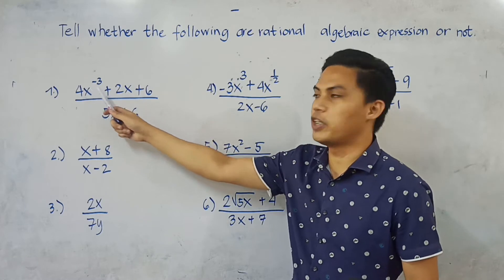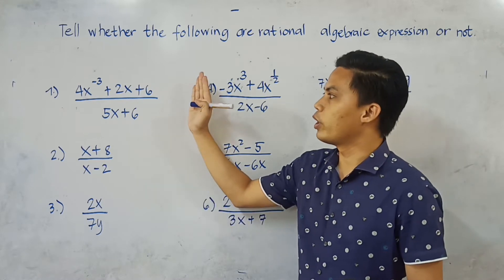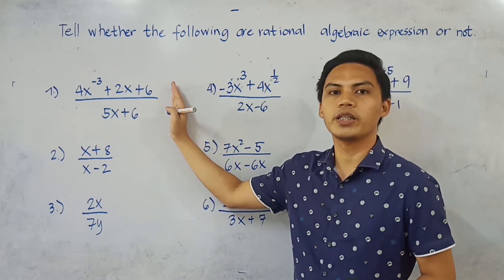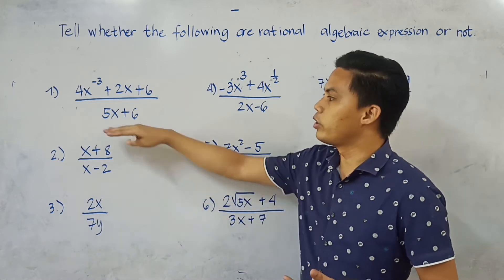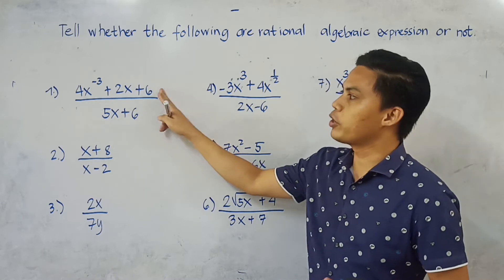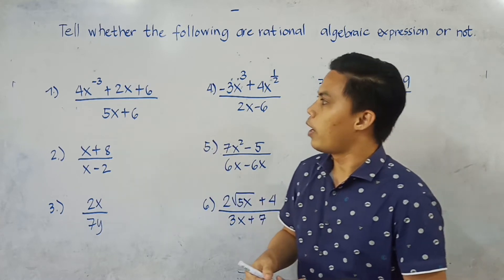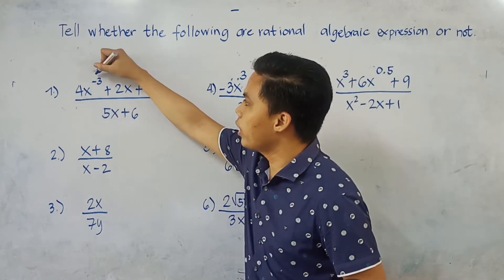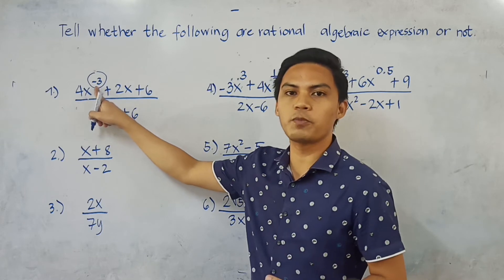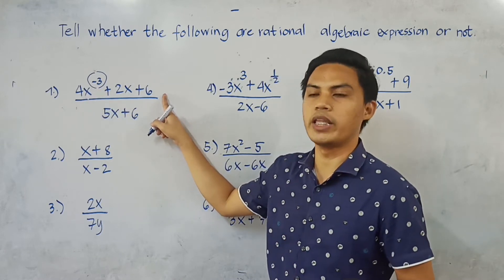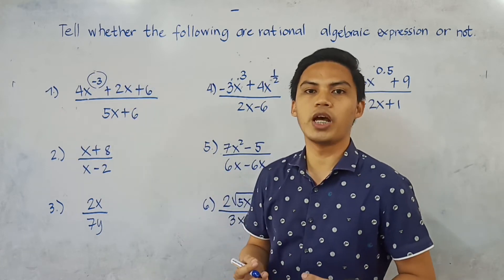Number 1: We have 4x raised to negative 3 plus 2x plus 6, all over 5x plus 6. This is NOT a rational algebraic expression. The denominator is a polynomial; however, the numerator is not a polynomial — because one of its variables has a negative exponent. Since the numerator is not a polynomial, this expression is not a rational algebraic expression.